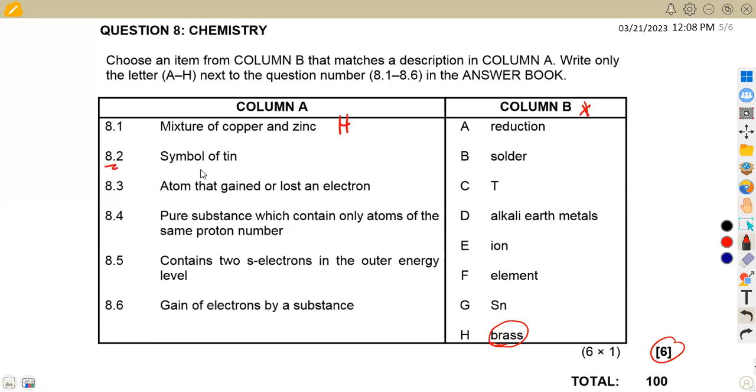8.2, the symbol for tin. So here, guys, this type of equation you're supposed to know because the answers they are given, so you're supposed to know your symbols and everything. So tin is given as Sn, this one on G. So don't be fooled with this T that you're given here.